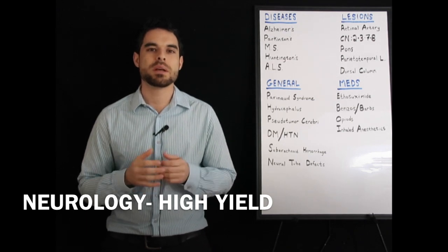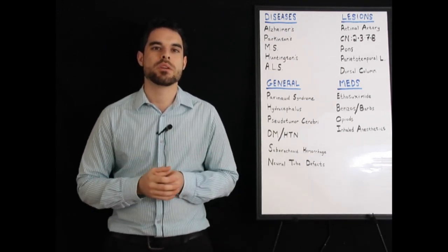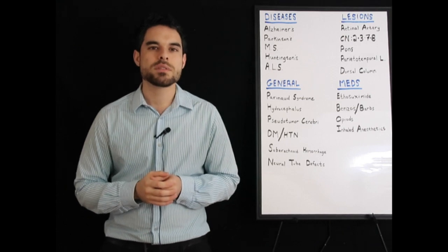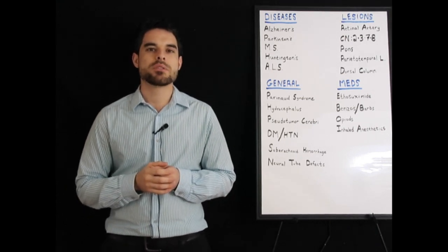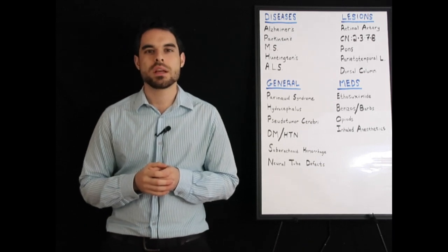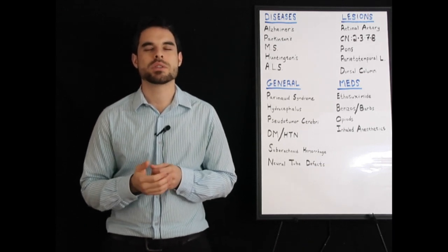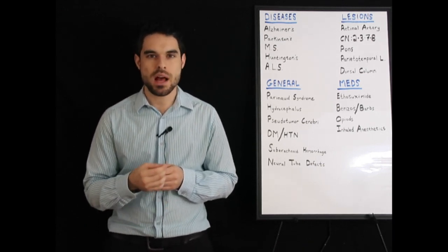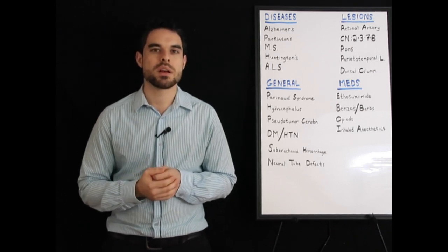We'll start with Alzheimer's disease, where you have the buildup of beta-amyloid plaque. The hippocampus is usually involved, and the amyloid precursor protein gene located on chromosome 21 is a marker for early-onset Alzheimer's, which is why individuals with Down syndrome who have an extra copy of that gene may develop early-onset Alzheimer's.